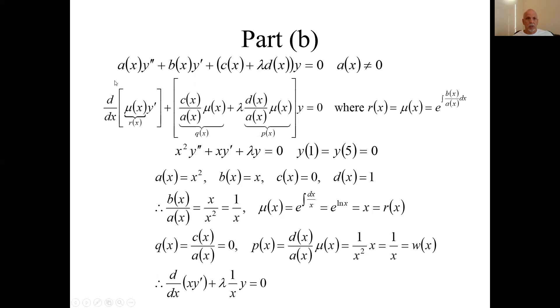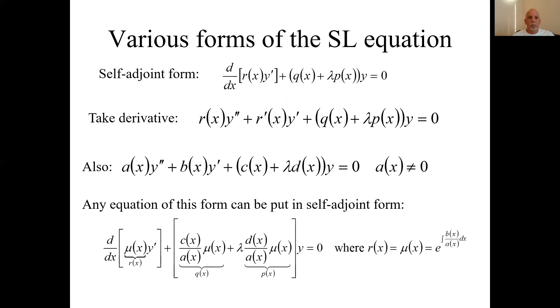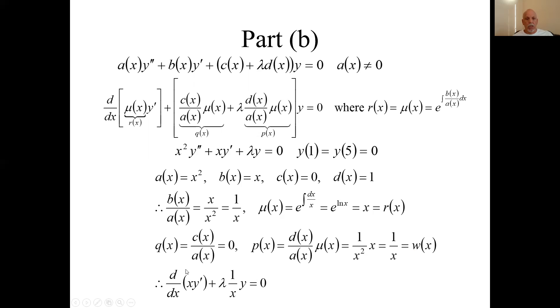So we have all the pieces here. You have to go back to what is the... Here's the self-adjoint form. We now have the r, the q, and the p. So when we plug them into this thing, we get this. So here is the same equation as this in self-adjoint form. This equation, self-adjoint form here, and the p, the weighting function, is 1 over x. That's part b.